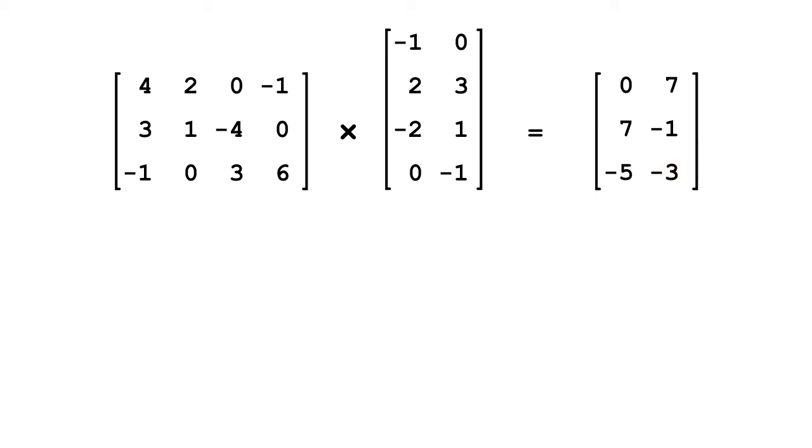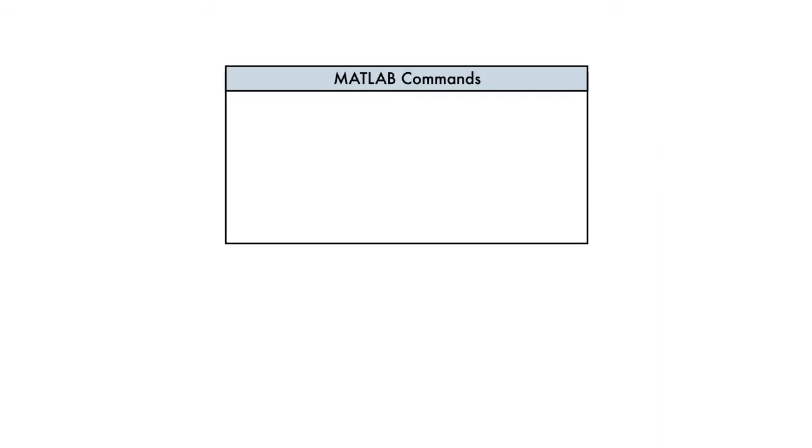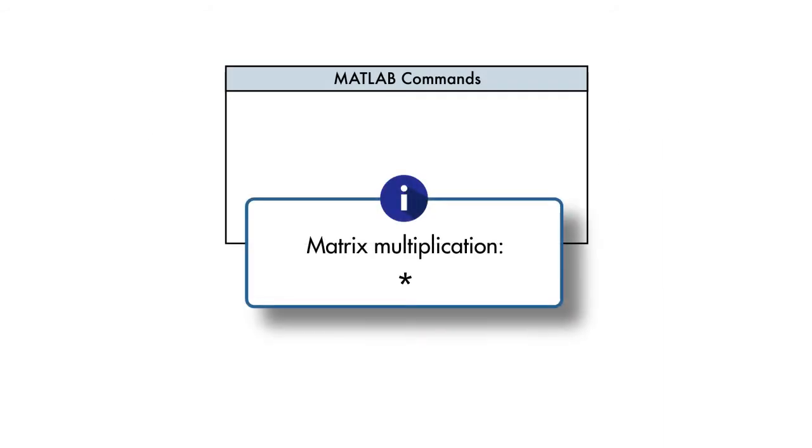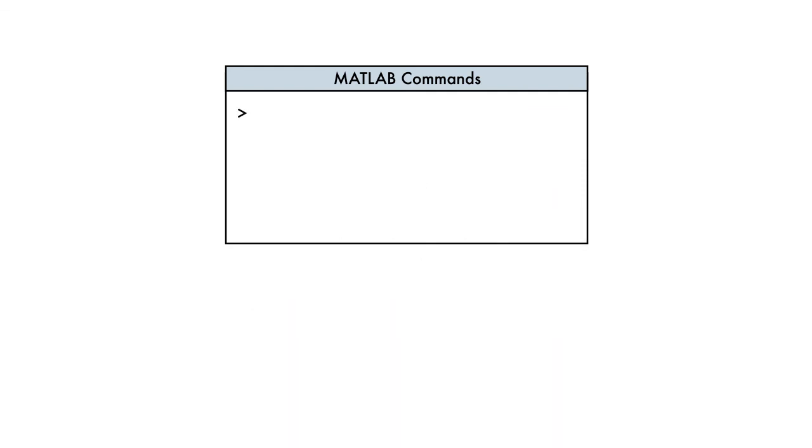Now we can multiply matrices by hand, so let's do it in MATLAB. We use the asterisk or star operator for matrix multiplication. For example, if we have a matrix and a column vector, then their product can be computed using this command.